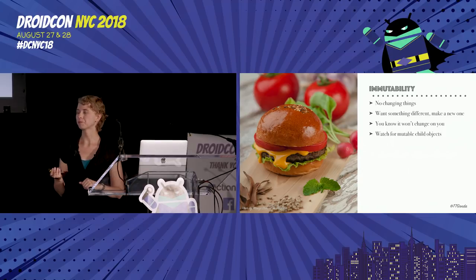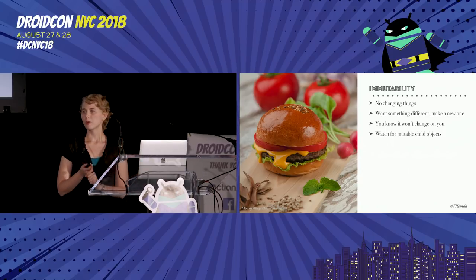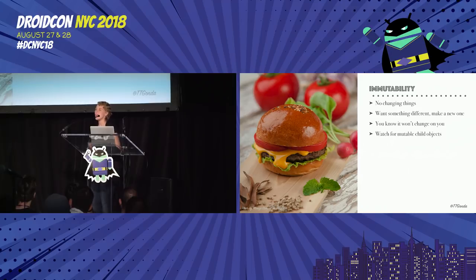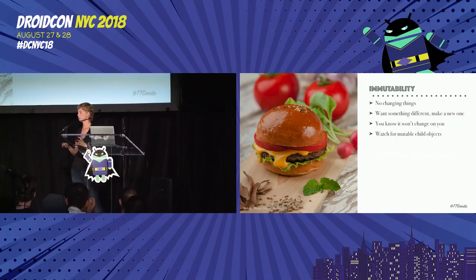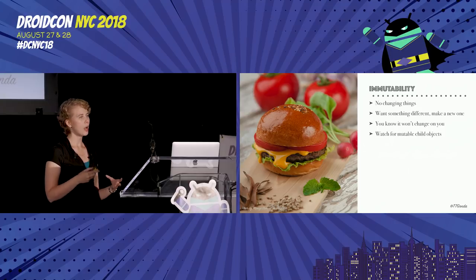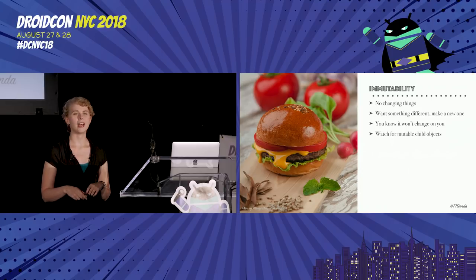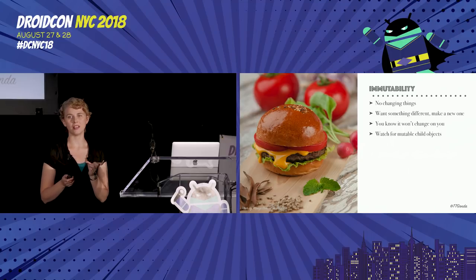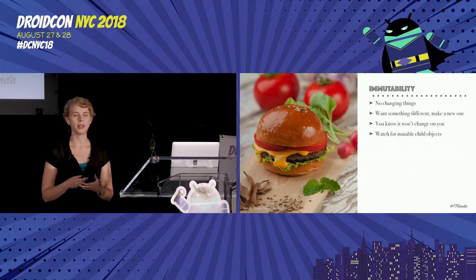Next, immutability. With immutability, there's no changing things. If you want something different — say, a different attribute on a class — you have to create an entirely new object. With this, you know things won't change out from under you. You do have to watch out for immutable child objects: if you have something that's immutable but it has a mutable list on it, you can't assign a new list to it, but you can change the contents of that list. We'll look at how to combat that in a minute.